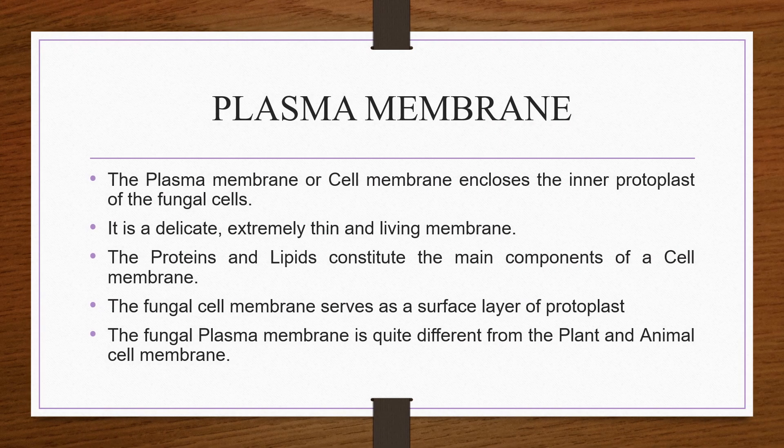Plasma membrane. The cell wall is followed by the plasma membrane, which encloses the cytoplasm. The plasma membrane is a delicate, extremely thin, and living membrane. Proteins and lipids are its main components. The fungal plasma membrane is quite different from plant and animal cell membranes — fungi contain ergosterol as the main membrane sterol, whereas animals and plant cells have cholesterol and phytosterols, respectively.